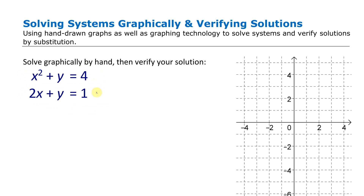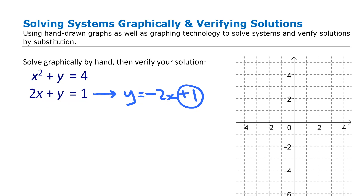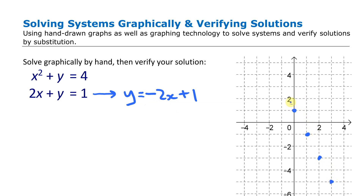We will start with the linear function. The simplest way to graph it is to put it into slope-intercept form. Moving the 2x to the other side gives y = -2x + 1. That has a y-intercept of 1 and a slope of -2, so we go down 2 over 1 and follow that pattern.